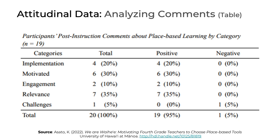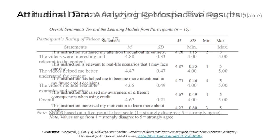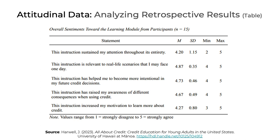Here's another example analyzing media ratings related to the designer's instructional decisions using Likert scale items. For example, the first statement was 'the videos were interesting and relevant to the content.' The four-number summary makes it easy to interpret results — on a five-point scale, the average was 4.88, and we can also see the standard deviation as well as minimum and maximum values. The table includes a useful note at the bottom explaining the Likert scale used. Another example involves retrospective data where participants rated their level of agreement with several statements about the learning module — again using a four-number summary. A table like this is a clean way to display retrospective results.